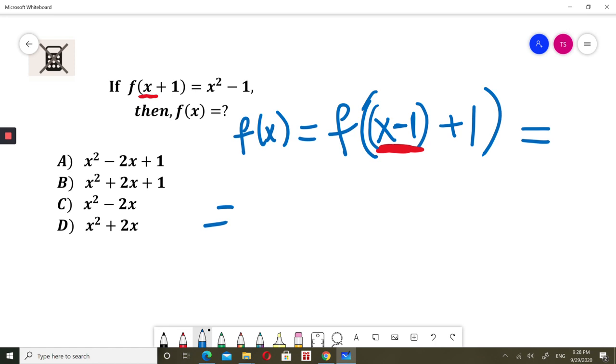So this will be equal, f of x plus 1 equals x squared minus 1. But my x is x minus 1. So this will be x minus 1 squared minus 1, because that was my x.